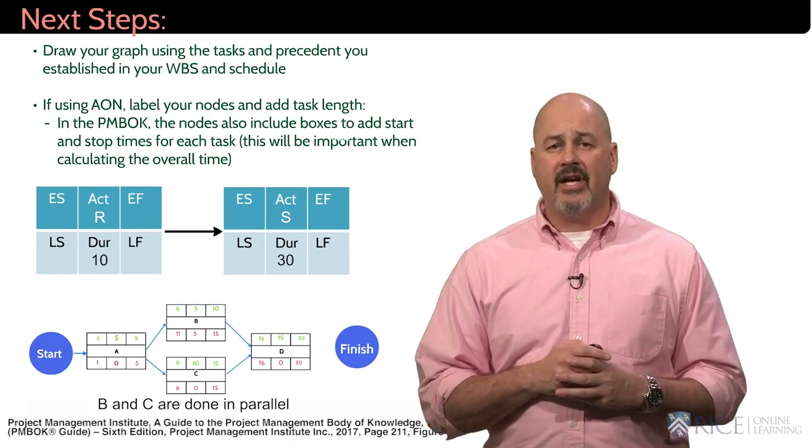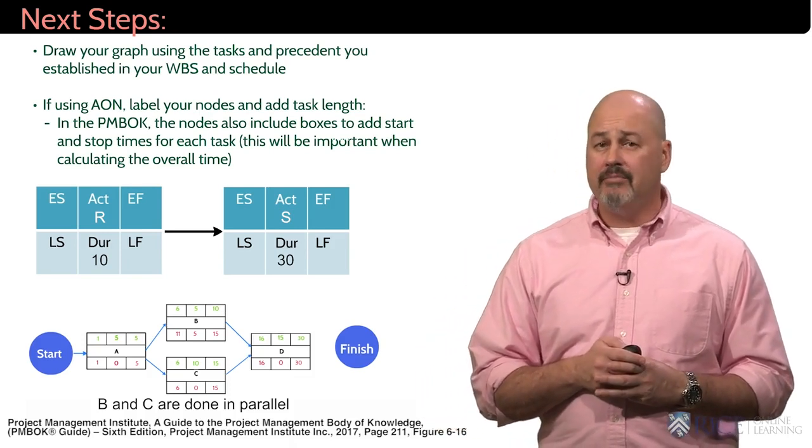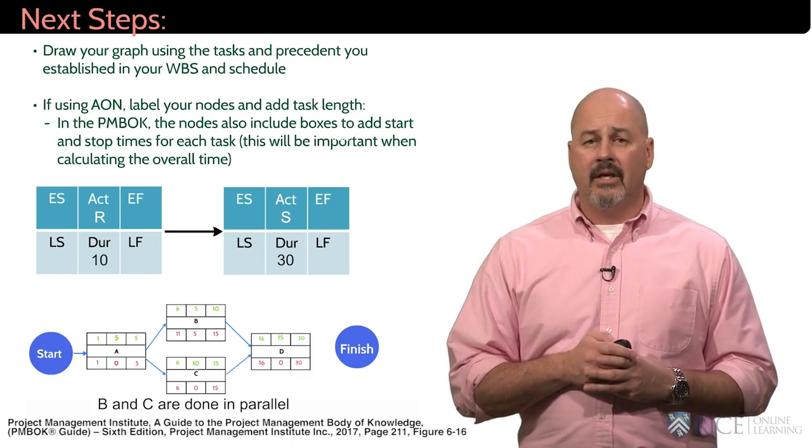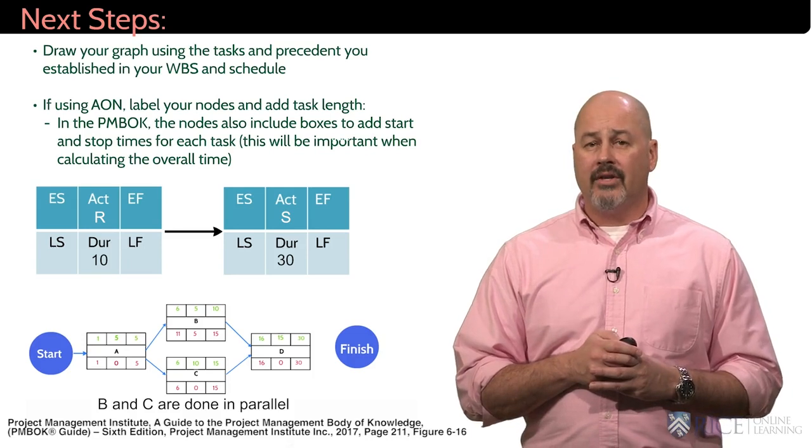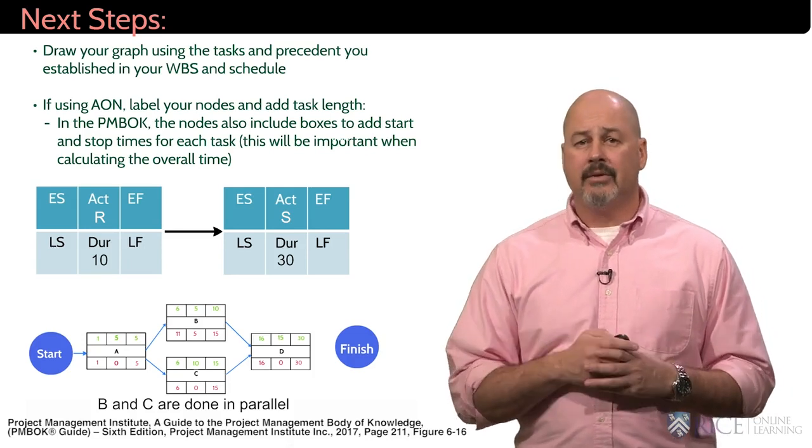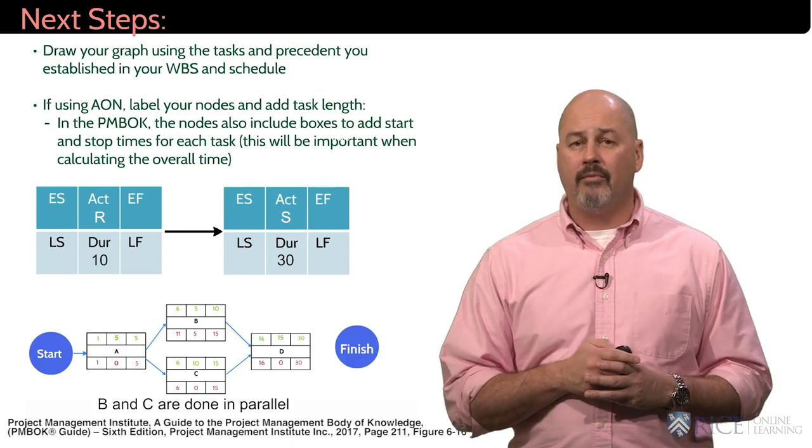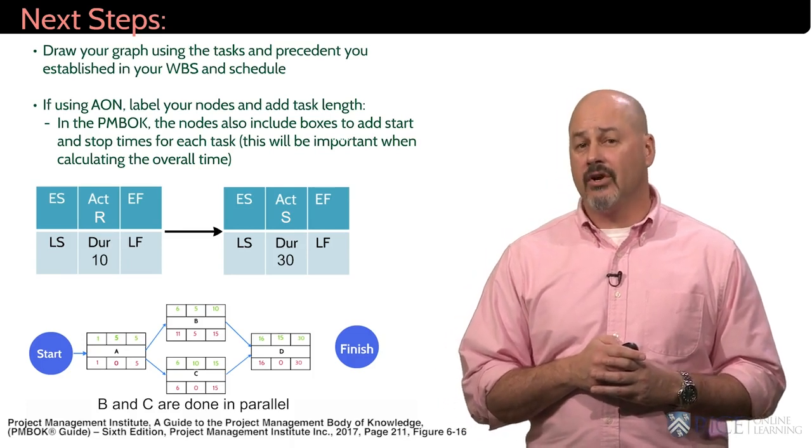As you can see in this diagram, A must precede B, and B can only start after A is completed. If you have tasks that can be done in parallel, you draw the diagram like our second example, where B and C do not depend on each other, but both must be completed before D can be started.